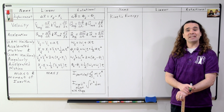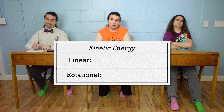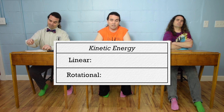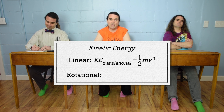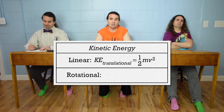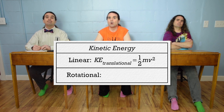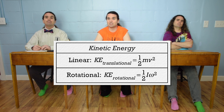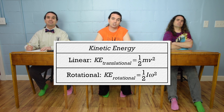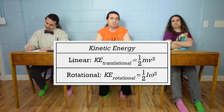Bobby, please give us the equations for linear and rotational kinetic energy. Linear or translational kinetic energy equals one-half mass times velocity squared, and rotational kinetic energy equals one-half moment of inertia times angular velocity squared.